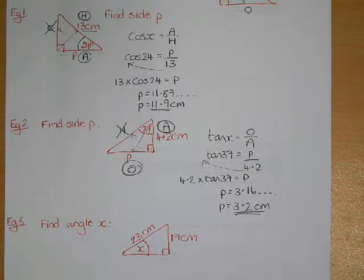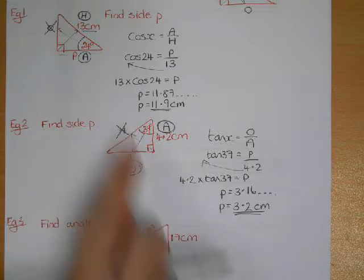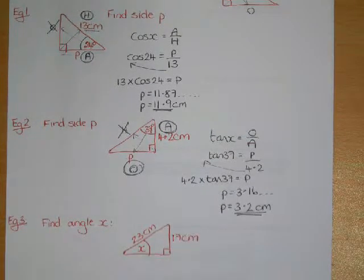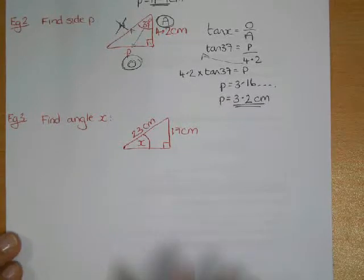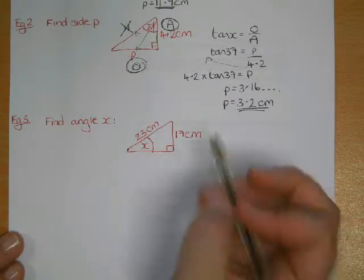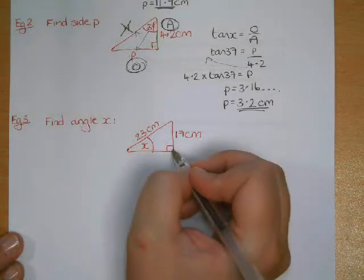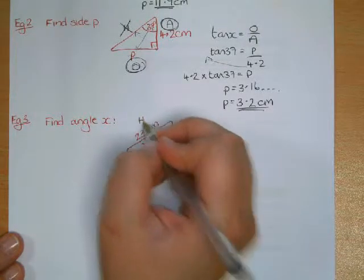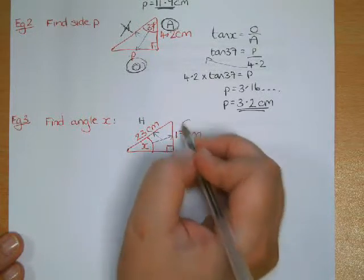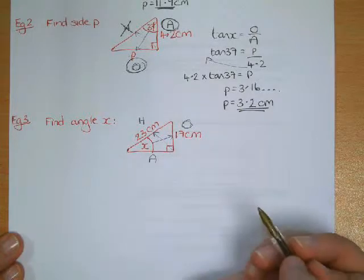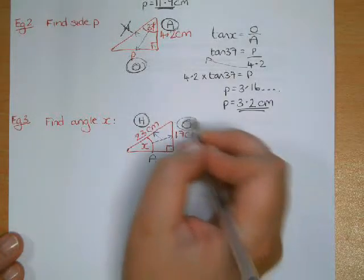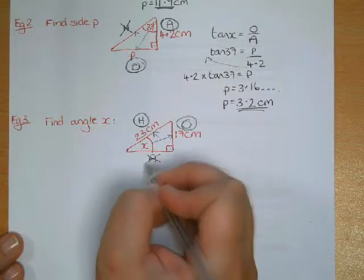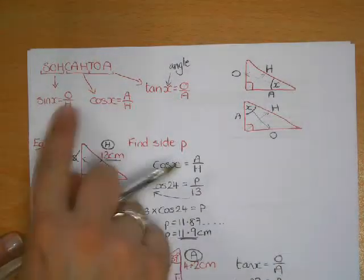The other way you can be asked to use trigonometry is to find the angle rather than a side. In this third example we do exactly that. You start the same way: identify the sides. Opposite the right angle is the hypotenuse. There's the angle we're trying to find — opposite it is the opposite side, and beside it is the adjacent. We know 23 is the hypotenuse and 17 is the opposite. We don't know the adjacent, so we use O and H, which is sine.